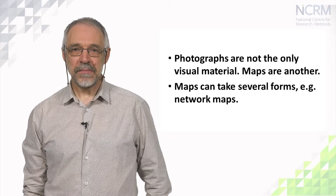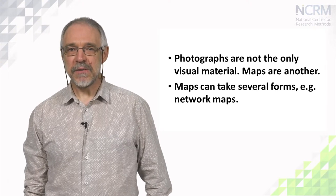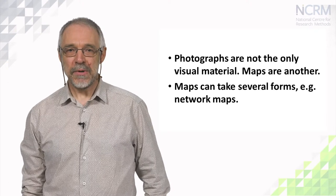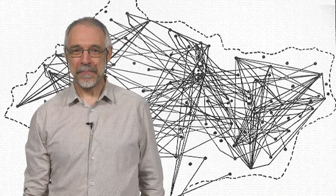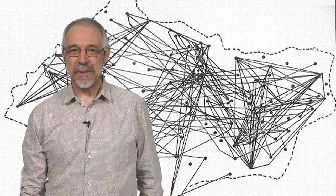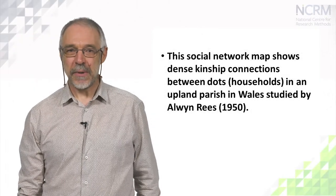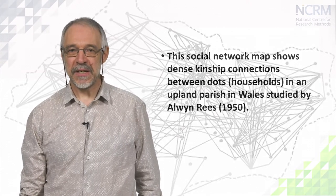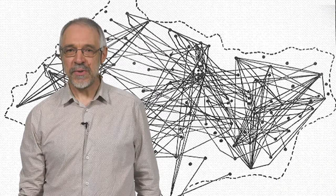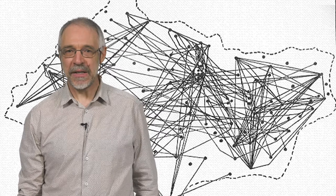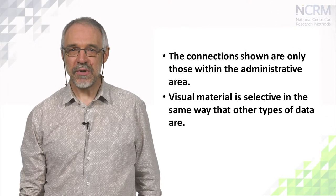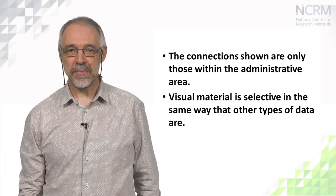Photographs are not the only visual material. Maps can be revealing of community patterns and can take several forms, for example network maps. This is a famous example of a network map — it shows dense kinship connections between dots, which represent households, in an upland parish in Wales studied by Alwyn Rees in 1950. Closer inspection reveals that it also shows a minority of households unconnected by kinship, at least within the area mapped. The connections shown are only those within the administrative area, the parish boundary.